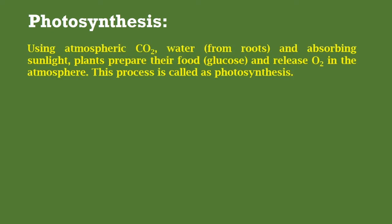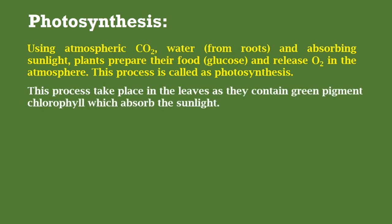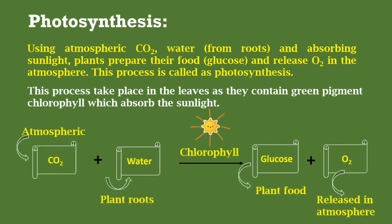Using atmospheric carbon dioxide, water from roots, and absorbed sunlight, plants prepare their food — glucose — and release oxygen into the atmosphere. This process is called photosynthesis. It takes place in the leaves, as they contain the green pigment chlorophyll which absorbs sunlight. We can represent the photosynthesis process by the following equation.